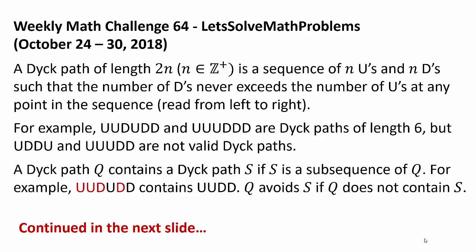For example, UUDUDD and UUUDDD are Dyck paths of length 6, but UUDDU and UUUDD are not valid Dyck paths. A Dyck path Q contains a Dyck path S if S is a subsequence of Q. For example, UUDUDD contains UUDD. Q avoids S if Q does not contain S.